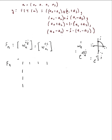Row one, column one gives omega_4^1 = i. Row one, column two gives omega_4^2 = i² = -1. Row one, column three gives omega_4^3 = i × i² = -i. We can see the pattern going around: omega_4^0, omega_4^1, omega_4^2, omega_4^3, then wrap-around at 4, 5, 6, 7, 8.